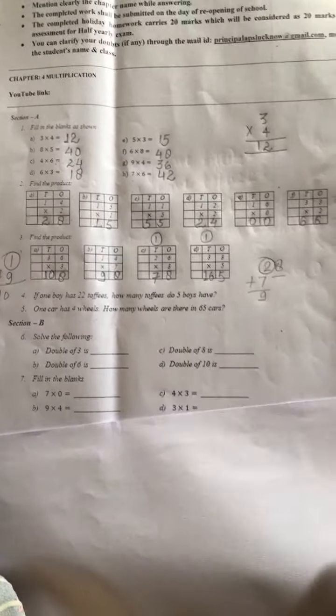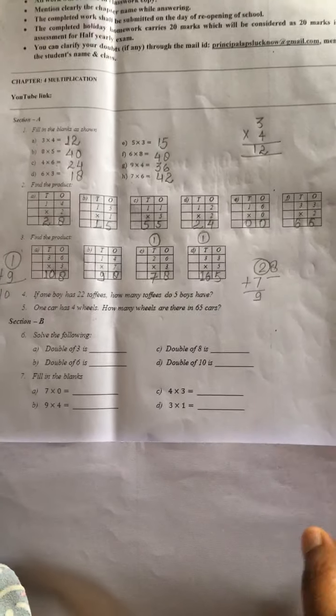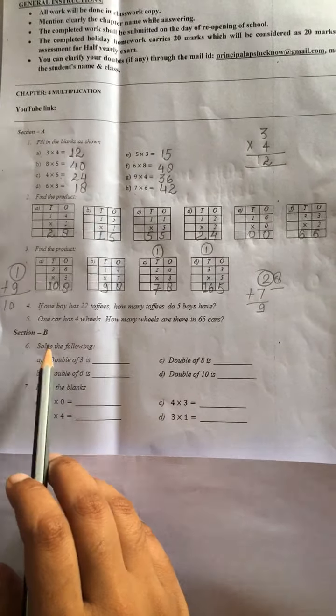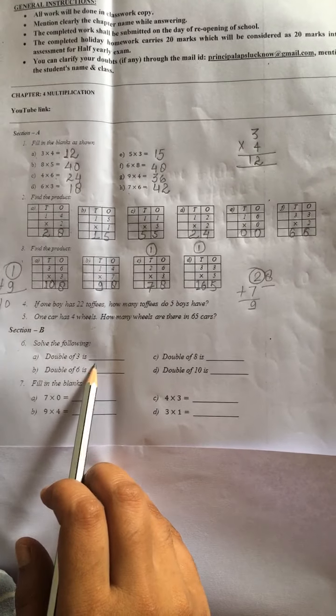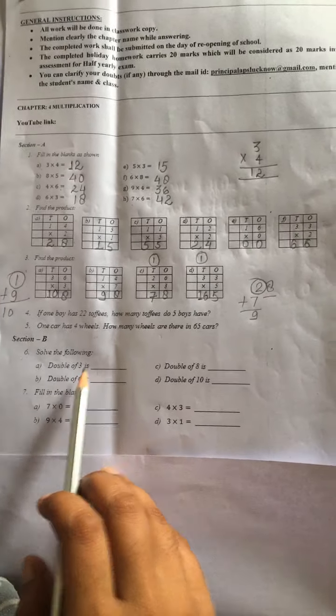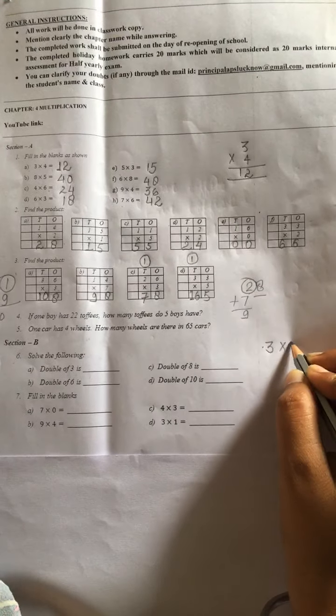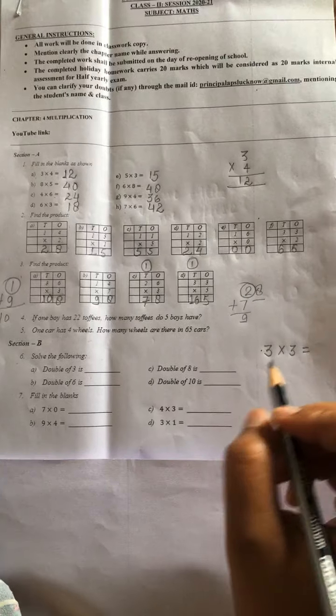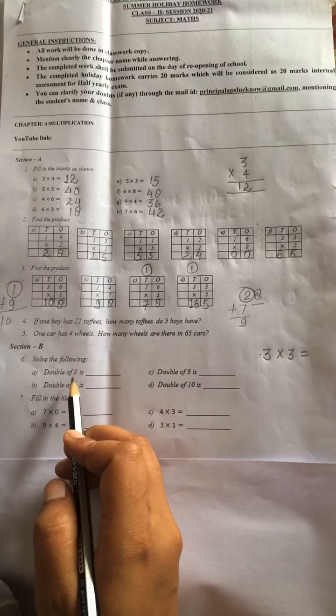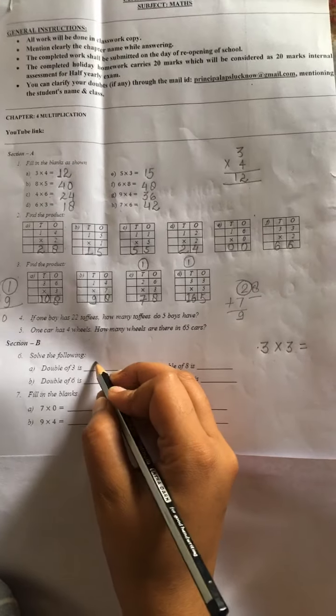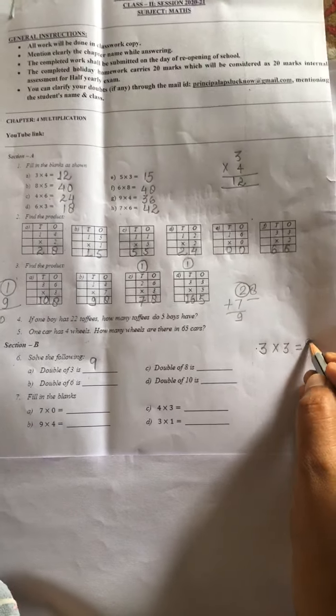Now come to the section B. Question number 6. Solve the following. Double of 3 is. Here double means 3 into 2. Double means kya hota hai, 3 ko 2 bar multiply. So 3 times 2 is 6. So yaha pe 6 likhenge. Double of 6 is, matlab 6 into 2, 6 times 2 is 12.